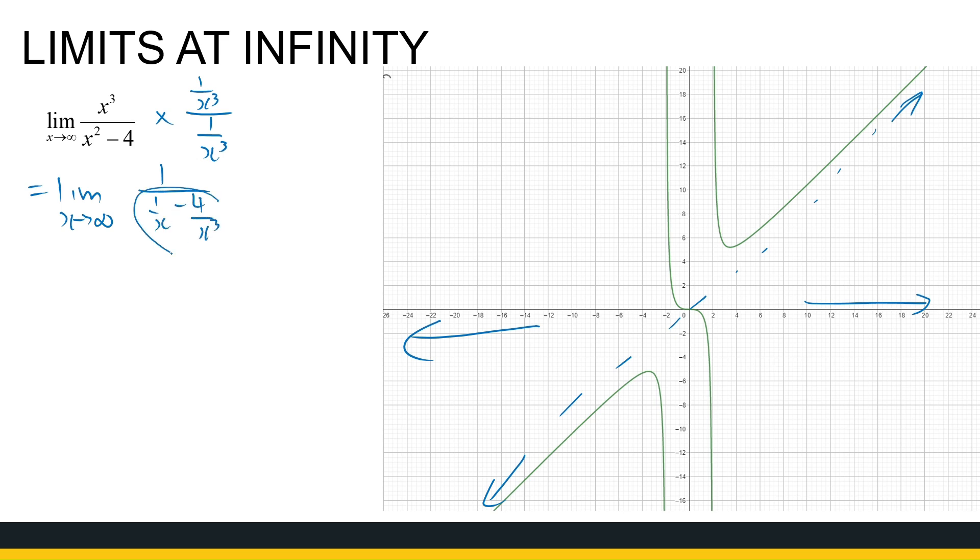In the denominator, we're going to get 1 over x minus 4 over x cubed. Both of those fractions go towards 0, so this is not going to help. We can't do this - it's not a legal algebraic operation and won't get us anywhere.